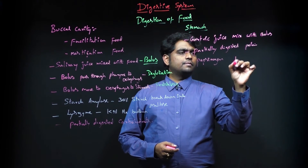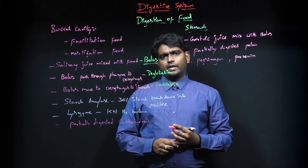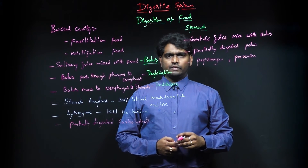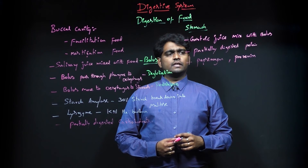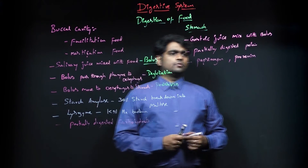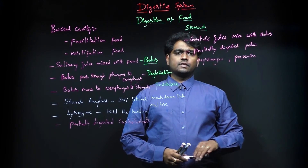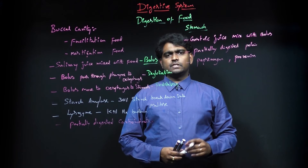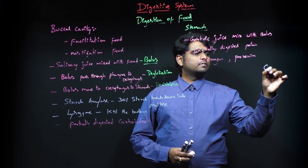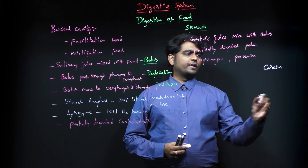The gastric juice contains pepsinogen and prorennin. Prorennin is very important in infants who are taking mother's milk. The milk is composed of a protein substance called casein. Casein will be partially digested with the help of prorennin.